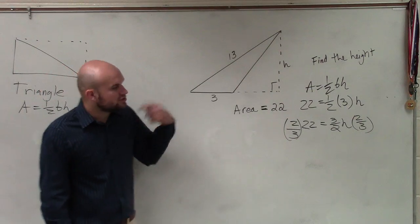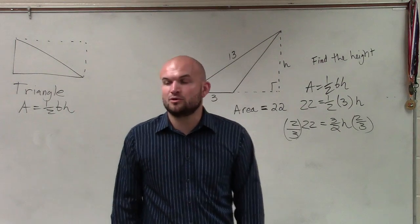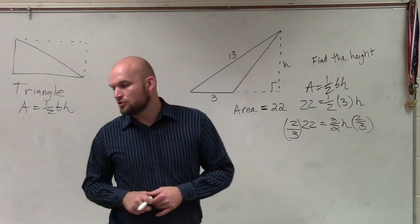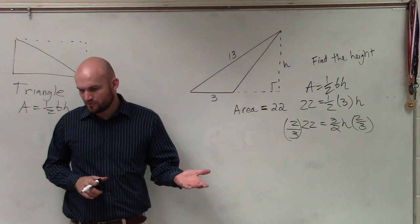Right? So two times 22 is going to be 44. Divide that by three is going to be, so 44. So that would be, oh, 44 would be 11.